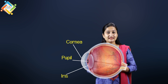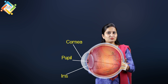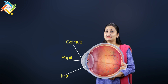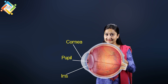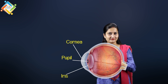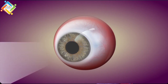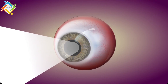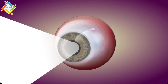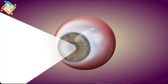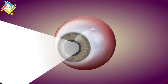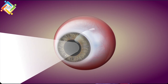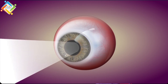Now let's see what is the purpose of the iris and the pupil. This basically depends on the intensity of light. If the light is more or less, the pupil expands or contracts accordingly, controlled by the iris.